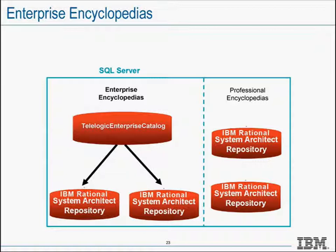Once the catalog is created, the special database called TeleLogic Enterprise Catalog is created on the database server. It's important to understand there is a one-to-one correspondence between a server and a catalog — one catalog controls access to multiple encyclopedias. When using a shared SQL server deployment, it is recommended to use a separate designated instance for the TeleLogic System Architect environment and encyclopedias.